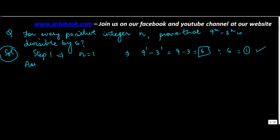The second step is to assume that this is true for n=k. This would mean that 9^k minus 3^k would be divisible by 6.